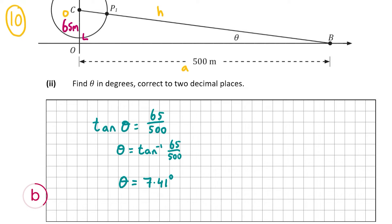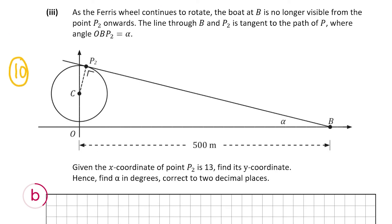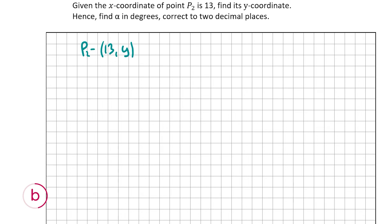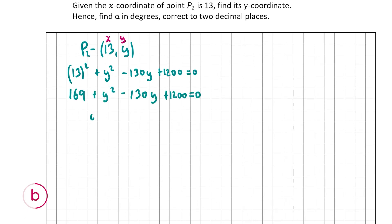B part 3 is also worth 10 marks. As the Ferris wheel continues rotating, the boat at B is no longer visible from point P2 onwards, where the line through B and P2 is tangent to the path of P. The x-coordinate of P2 is 13; we need the y-coordinate. Substituting x = 13 into the circle equation: 13² + y² - 130y + 1200 = 0, giving y² - 130y + 1369 = 0.